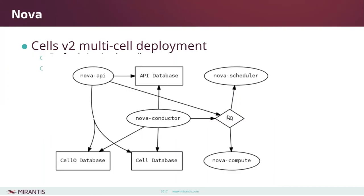First off we have the OpenStack compute service, Nova. The last time we talked about Cells v2 and how it was coming up but only in the form of single-cell deployments. Now in Pike, the default is still a single-cell cluster but you now have the option of doing multiple cells.